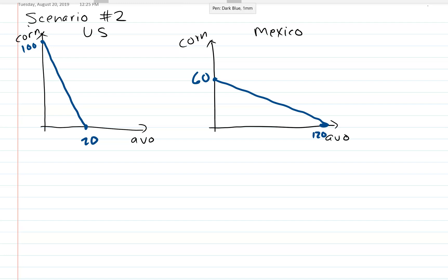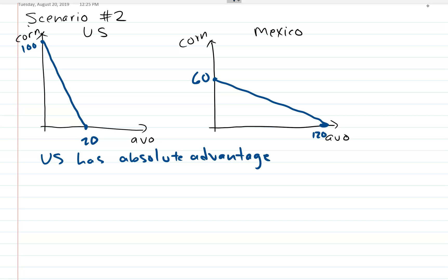The first thing we can say about the two countries is that the US has absolute advantage in corn. We can see this because in the problem we assume they're using the same amount of land and labor, so resources are the same, but the US can produce more corn. Mexico has absolute advantage in avocados.